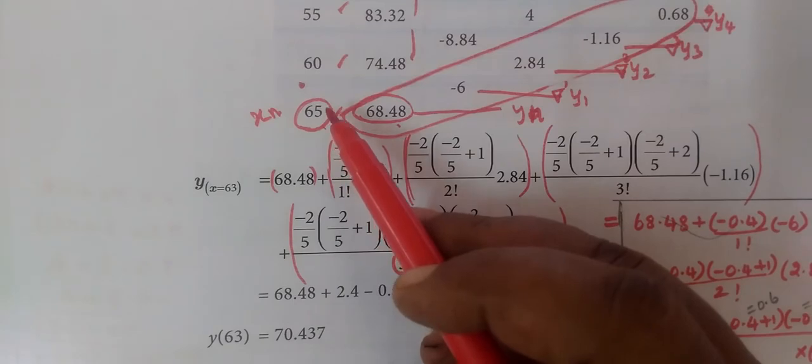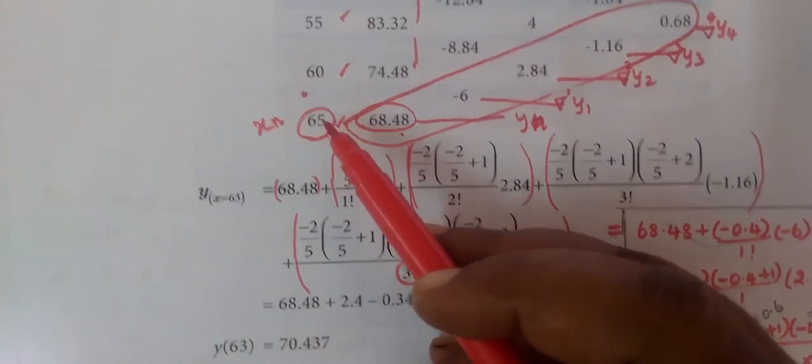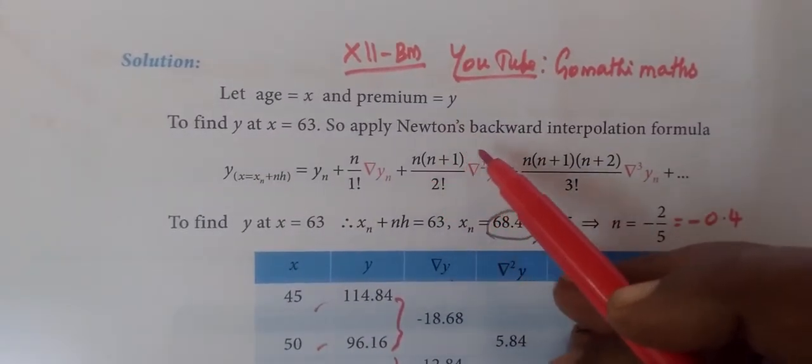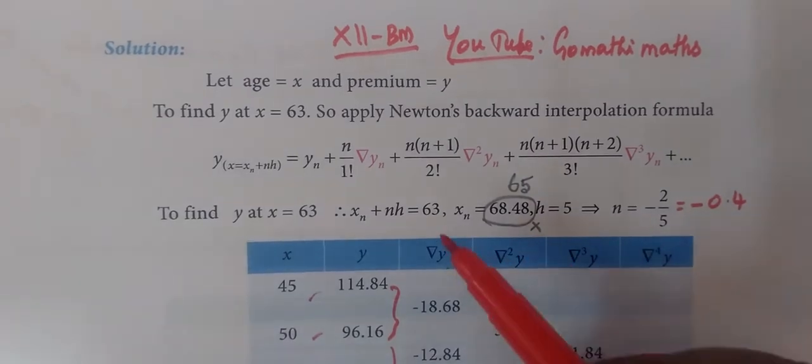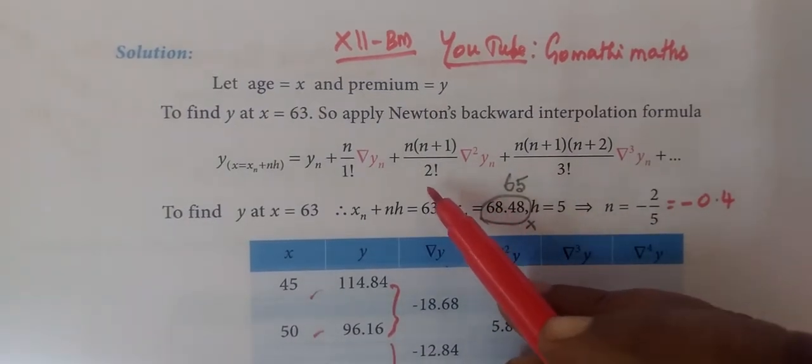We are using Newton's backward interpolation formula. Here you are using Newton's backward interpolation formula. This formula will be found, so what do we find in this formula?